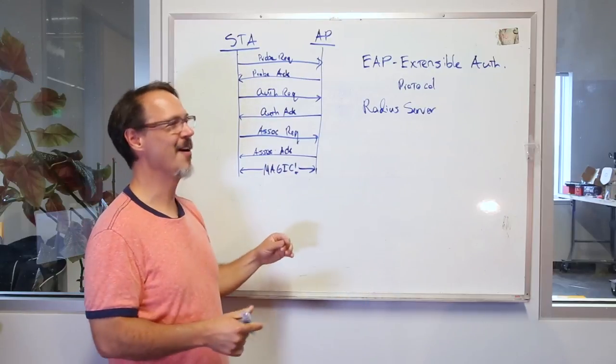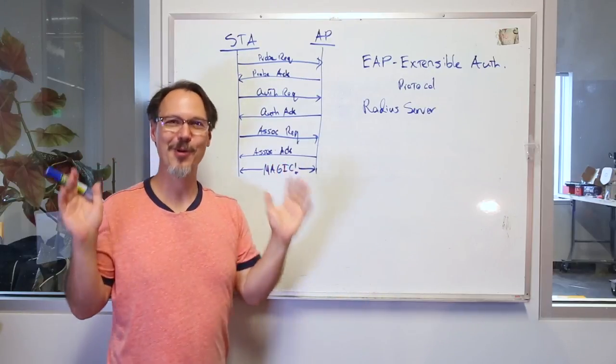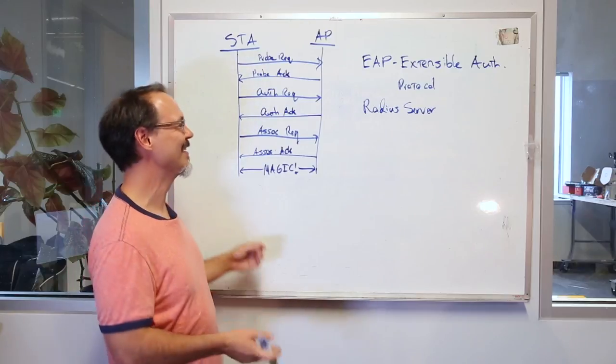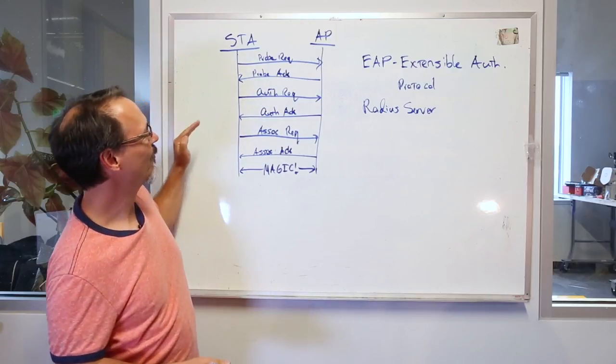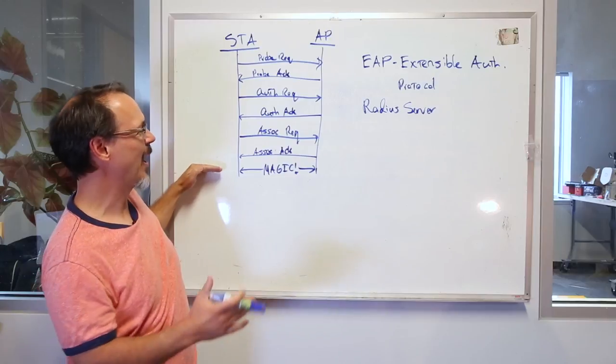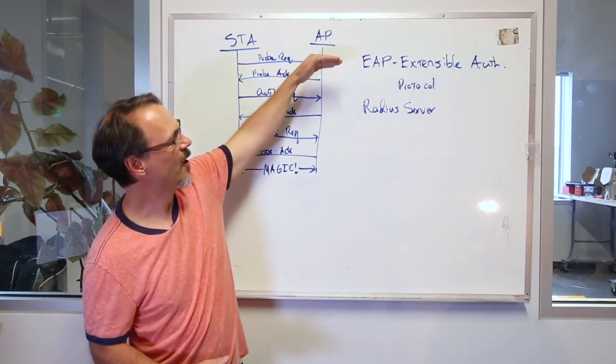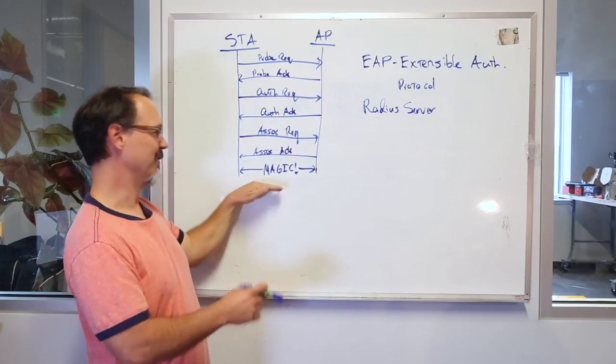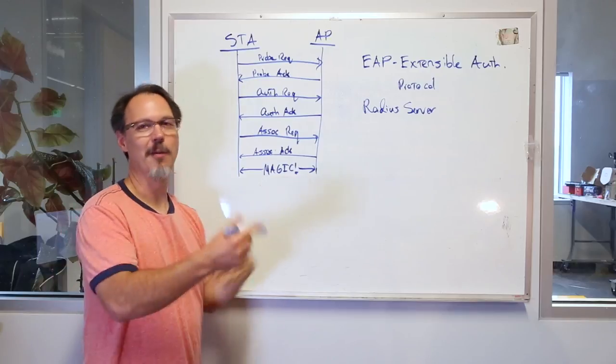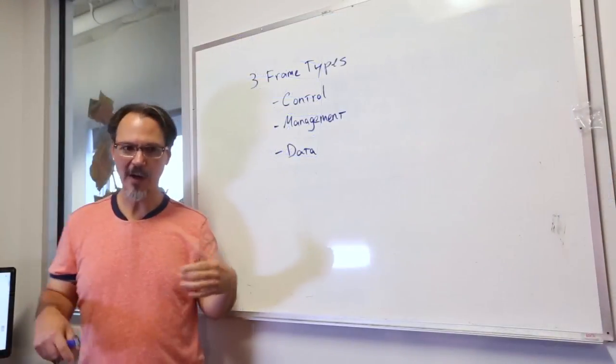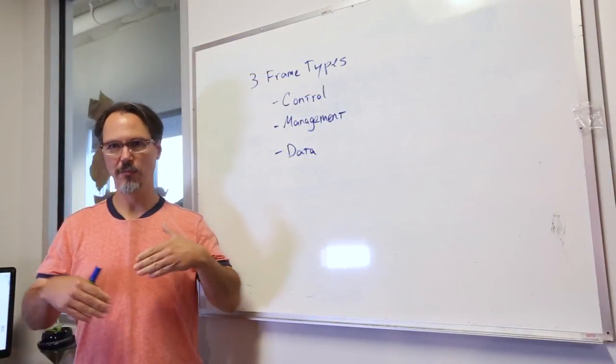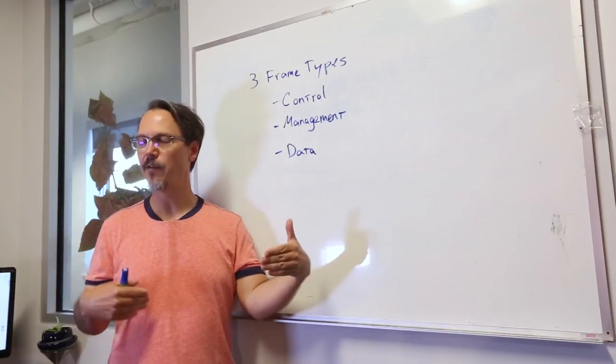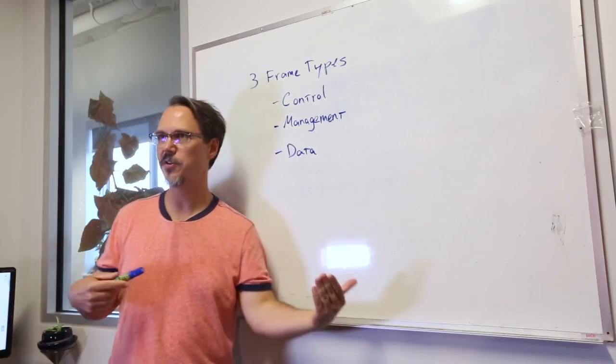So in essence, this is sort of the back and forth that occurs. And after you get through the authentication, then you get the magic and you get back and forth. Let's talk about the actual frames that go back and forth between your access point and your station.